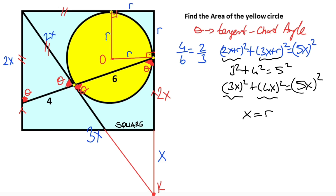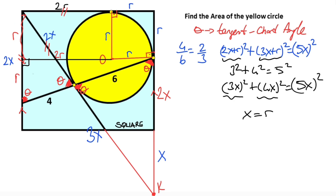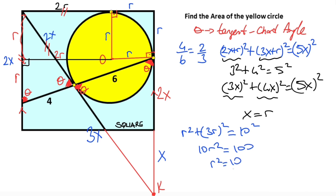Let's write here two r. If we extend here, we get a right triangle. If here is two r, that means this length must be equal to r. And if here is r, that means this length must also be equal to r units. Since x equals r, this length two x must equal r, so r units are left here. Applying the Pythagorean theorem to this triangle: r squared plus two r whole squared equals ten squared. So ten r squared equals one hundred, which means r squared equals ten.